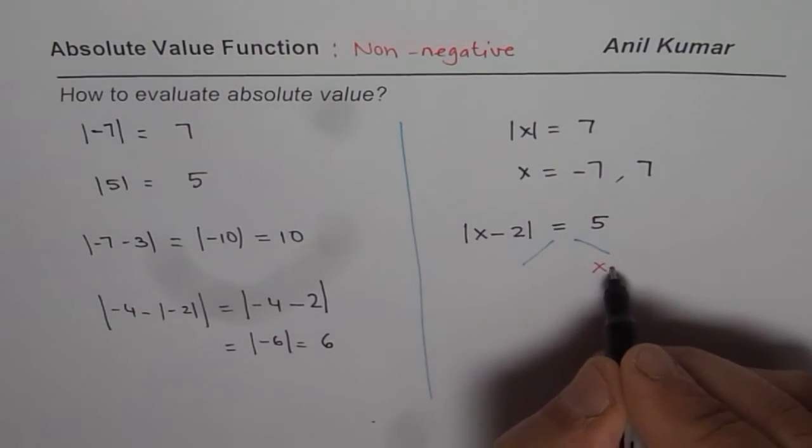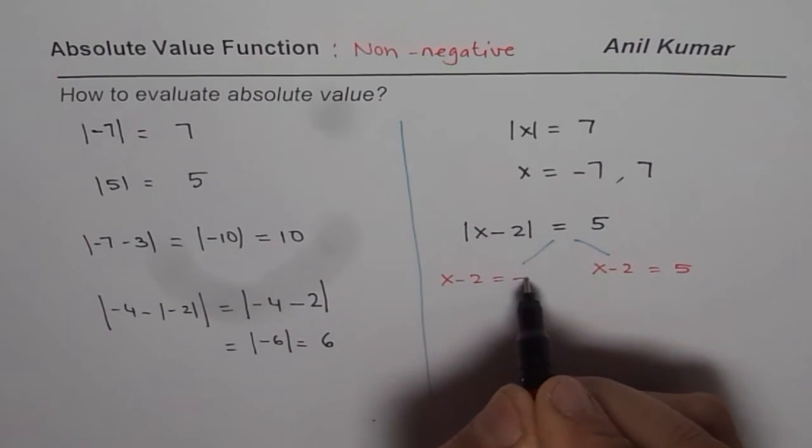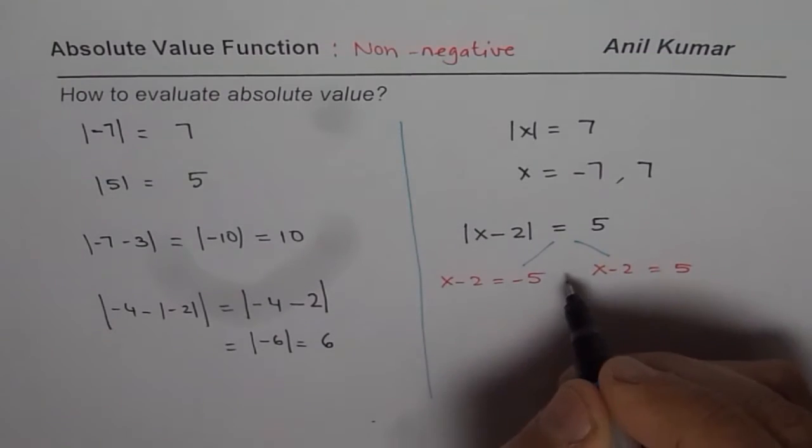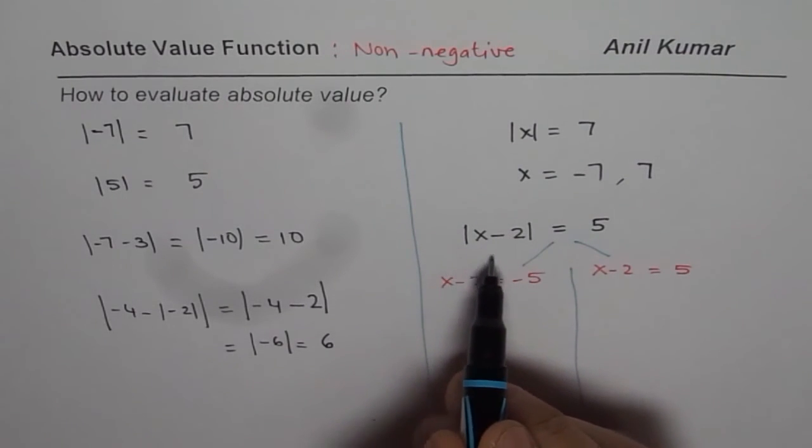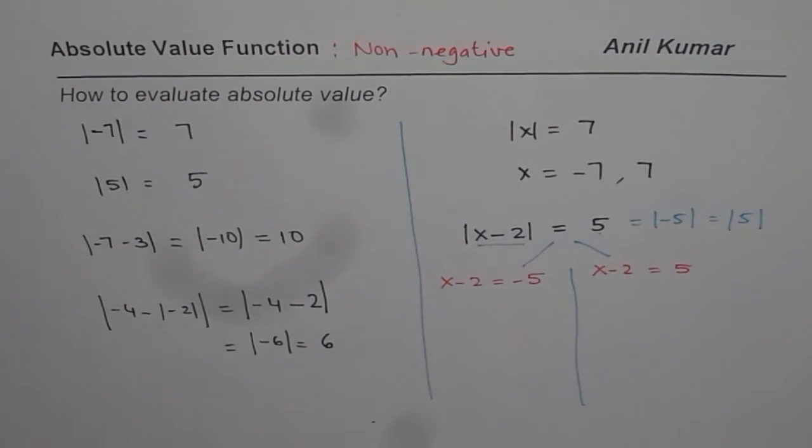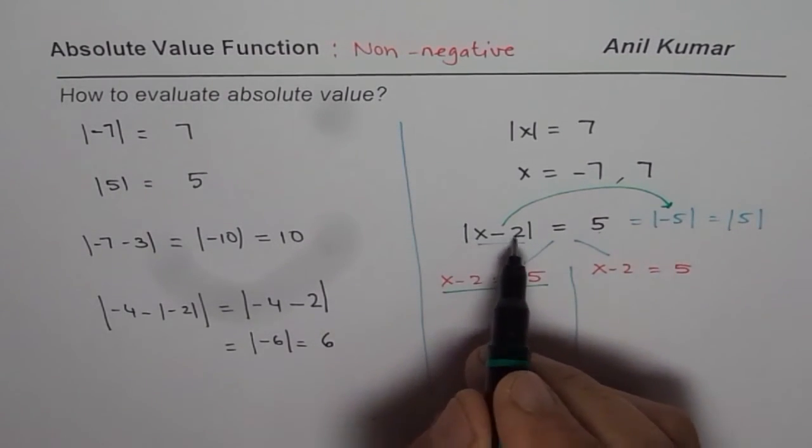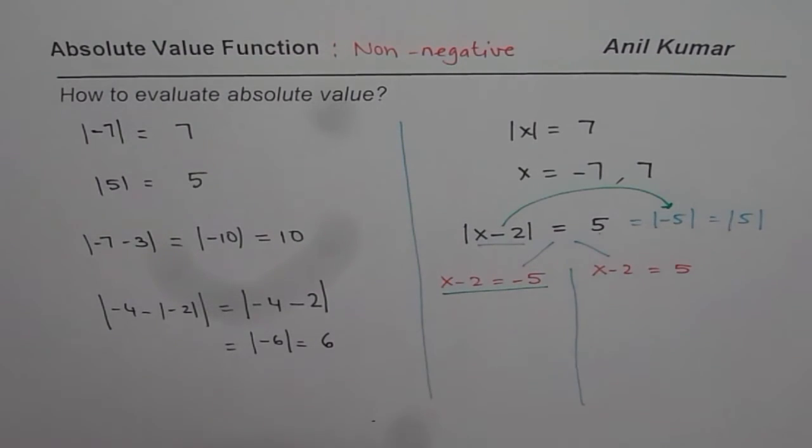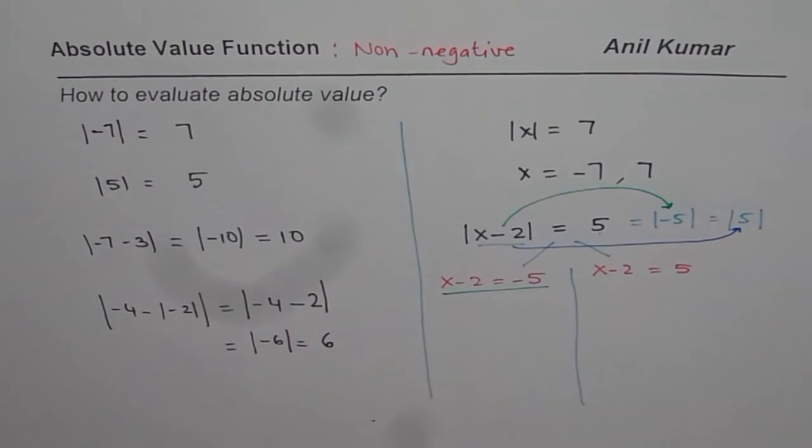One as x minus 2 equals 5, and the other one is x minus 2 equals -5. That is how you should think about absolute values: non-negative. Even if inside we have this as -5, absolute 5 gives us 5 as a result, which is same as absolute value of 5. So on the left side we are trying to find this value, x minus 2 is -5. On the right side we are trying to calculate this value, absolute value of x minus 2 is 5.